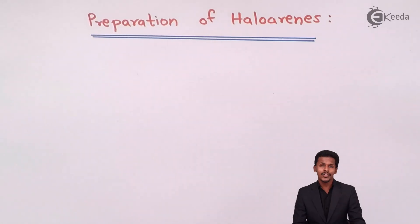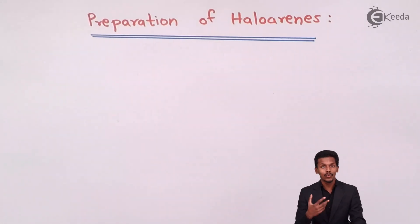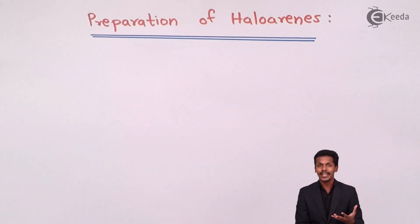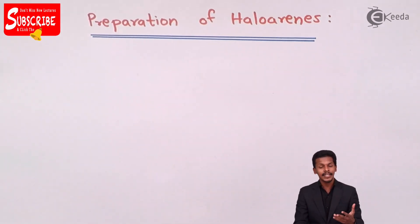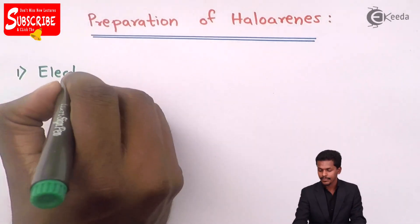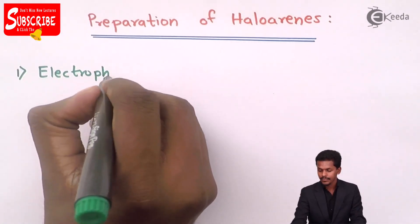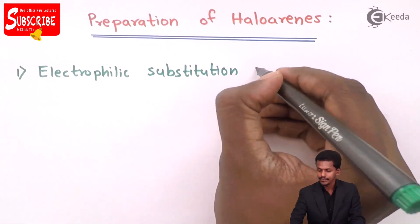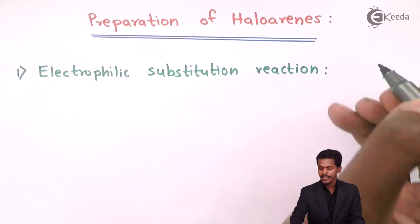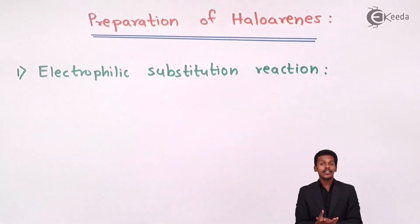Talking about the preparation of haloarenes, haloarenes can be prepared by two methods. The first method is electrophilic substitution reaction.